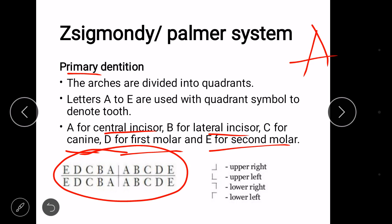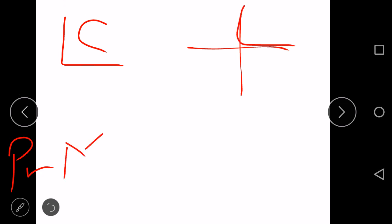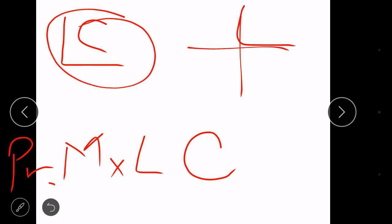Let's take an example. Now we know alphabets are for primary dentition, so primary. Then this symbol is for maxillary left, so maxillary left. And C stands for canine. So this symbol represents the tooth: primary maxillary left canine.